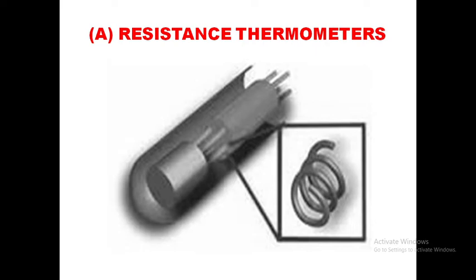These thermometers work on the principle that electrical resistance varies in pure metal according to temperature. Thermal vibration hinders the flow of electrons in metal.